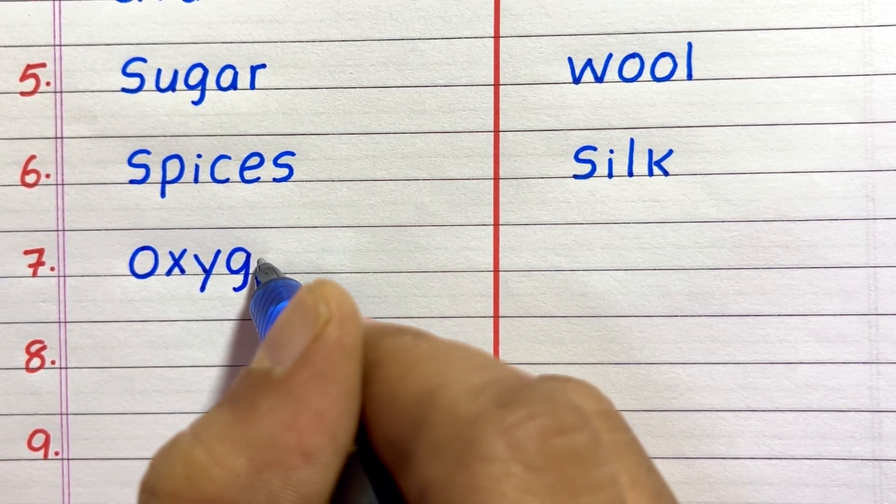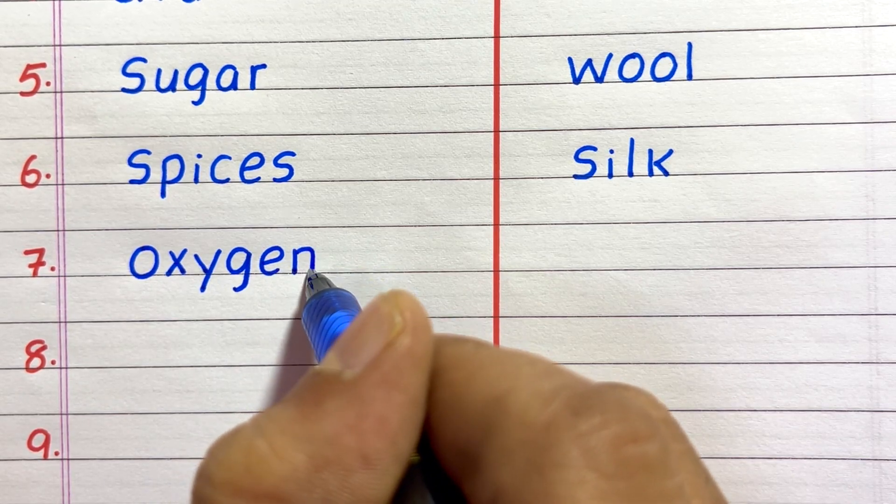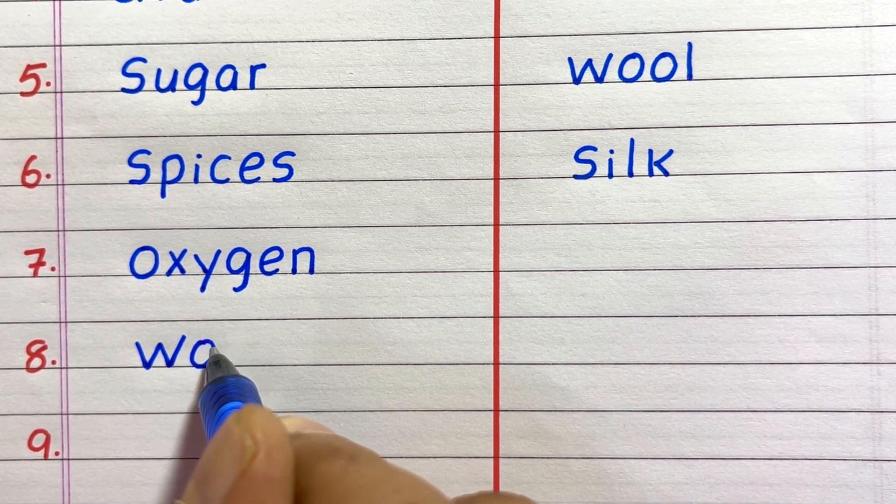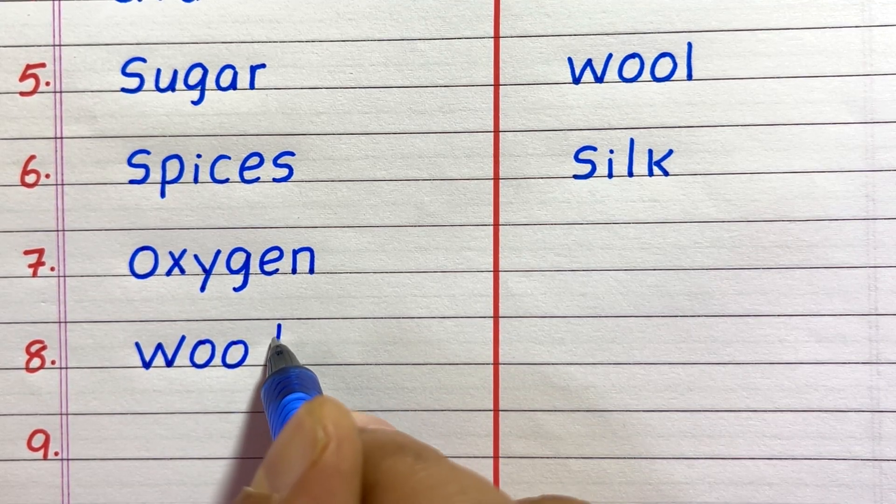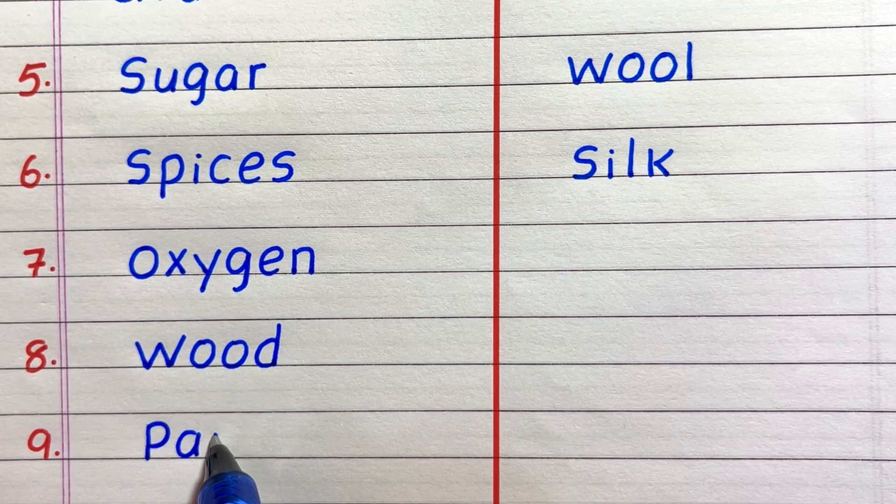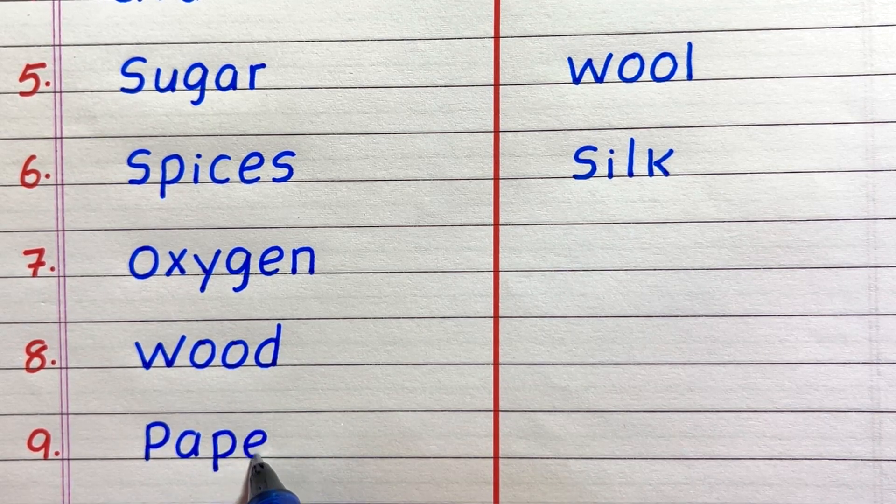Seventh thing that we get from plants is oxygen. Eighth, wood. Ninth, paper.